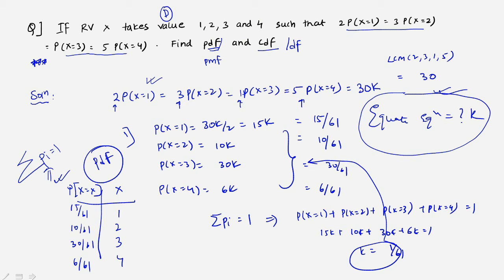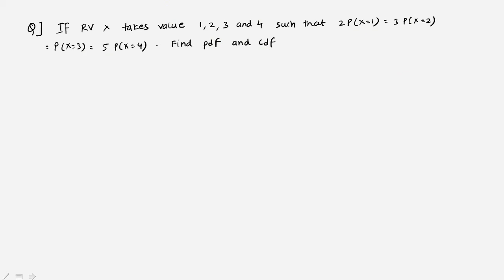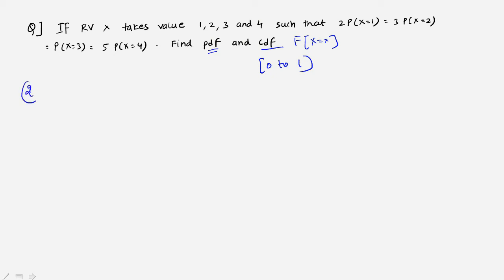Now it's time to find the CDF, which is more interesting. The CDF, F(x), is the cumulative distribution function. Its range is always from 0 to 1 — it cannot exceed 1 or go below 0. We have one variable X taking four values: 1, 2, 3, and 4.